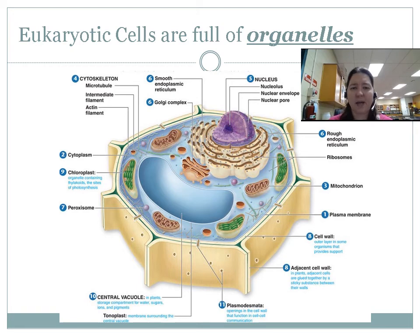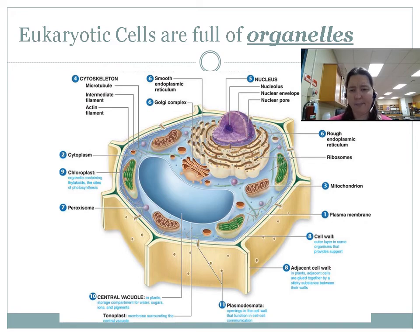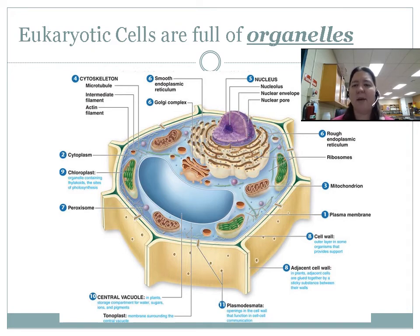In eukaryotic cells, the Golgi apparatus — number six — is doing its job. The mitochondria — which is number three, and you can see there are a couple in the cell picture — is doing its job. The chloroplast is doing its job, and we're going to talk about all of those.